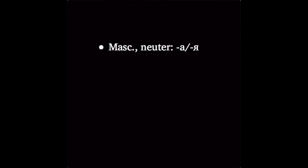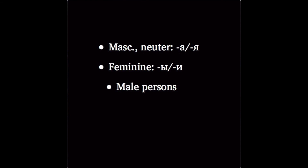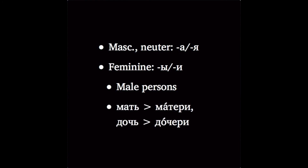Summing up: the genitive ending for masculine and neuter nouns sounds like А — spelled with А after hard stems and with Я after soft stems. Feminine nouns in the genitive singular end in Ы after hard stems, И after soft stems, or when the seven-letter spelling rule is involved. Remember that male persons and nicknames ending in А or Я also take the Ы/И ending. And watch for the irregular words мать and дочь, which become матери and дочери in the genitive singular.